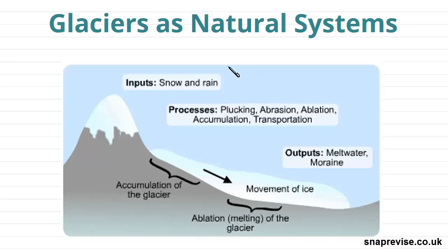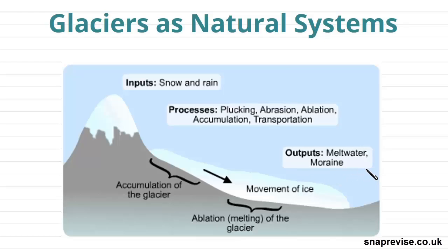This diagram is showing the open system of an ice sheet. To recap what we know, open systems include inputs, as shown here; stores, which is the mass of ice; processes, shown here as plucking, abrasion, ablation, accumulation and transportation — these are topics we will cover later on — as well as outputs, shown here as meltwater and moraine.